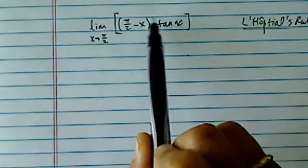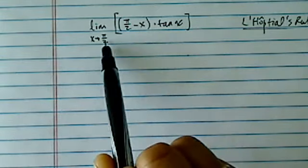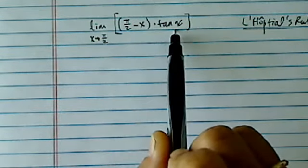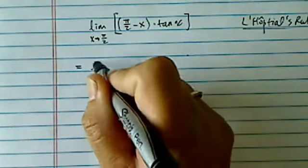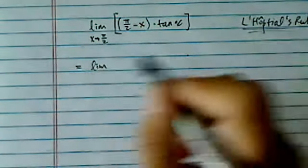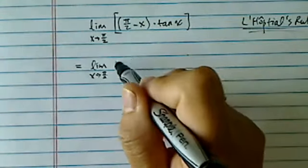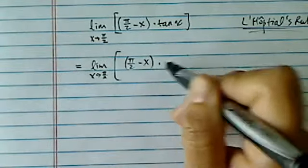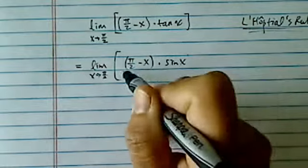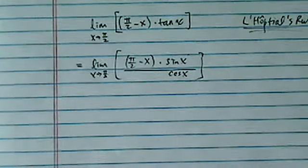Anyway, in order for this to happen, we either have zero times infinity - that's the case for us. We have a zero here and this one blows up at infinity. We're going to convert this into a ratio so we can use L'Hôpital's rule properly. The way we're going to do it is for pi over 2 minus x, we're going to rewrite tangent as sine over cosine.